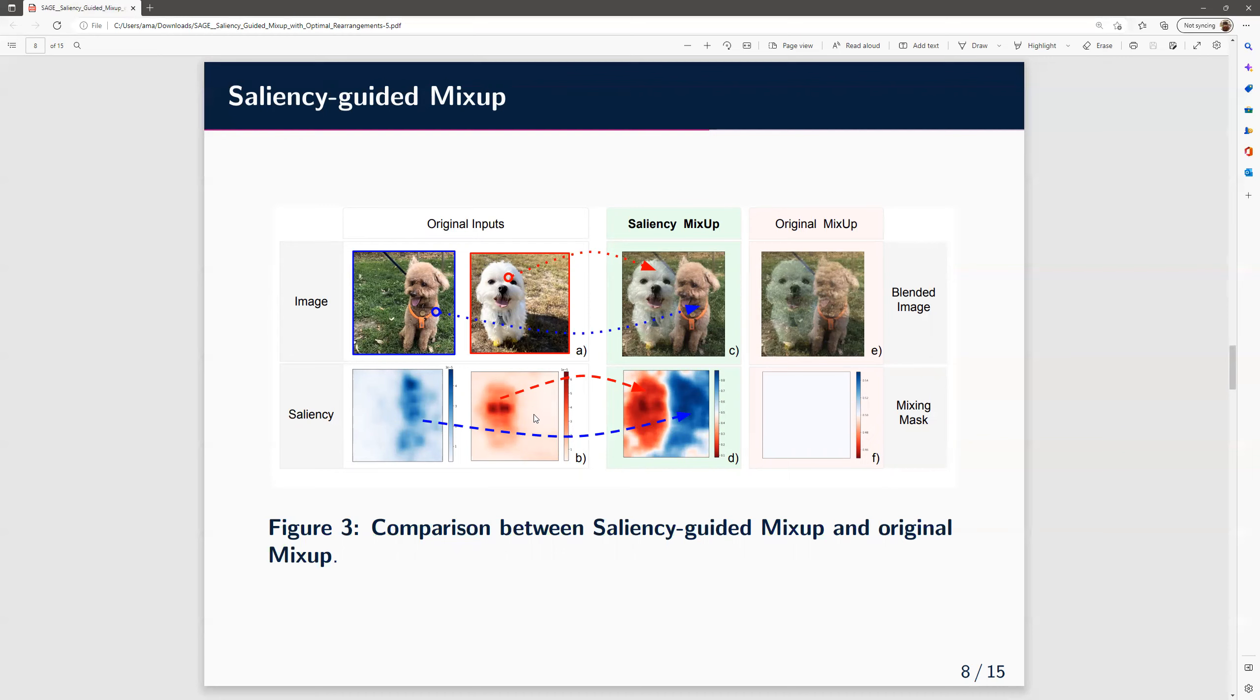Consequently, salient regions from different images contribute to different locations, and the resulting mixed image is more realistic and more informative. In contrast, the original mix-up produced a uniform mixing mask, which resulted in an unrealistic and unclear image.